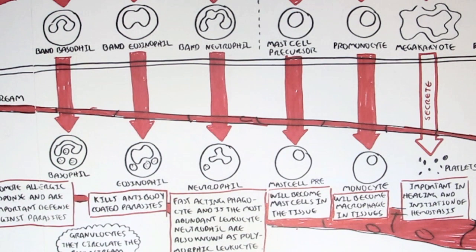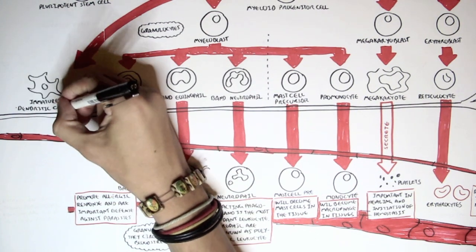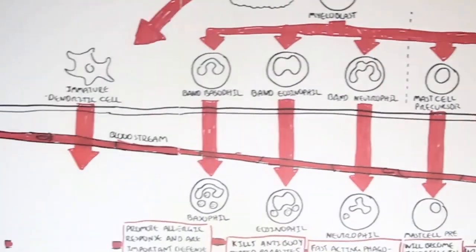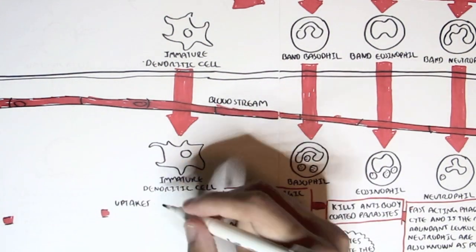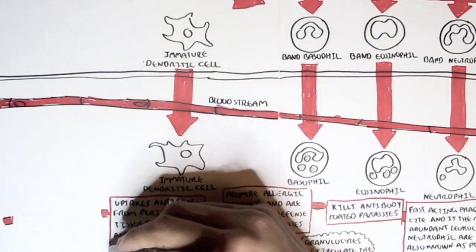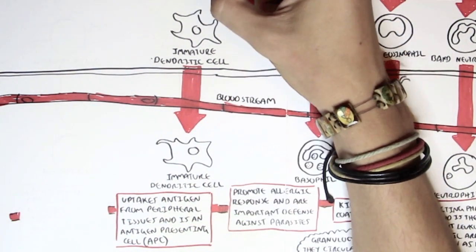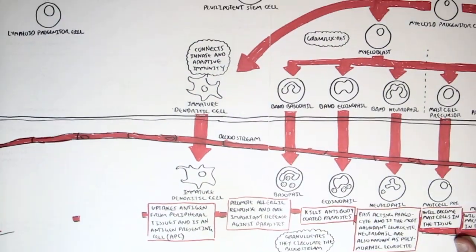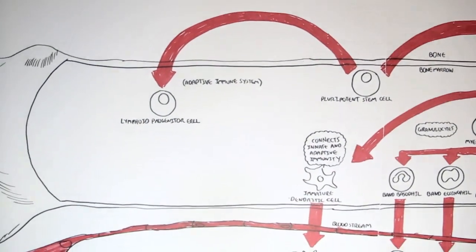The myeloid progenitor cell can also give rise to immature dendritic cells. Immature dendritic cells, once they leave the bone marrow, remain immature dendritic cells for a time. The dendritic cell's role is important because it is the connection between the innate and the adaptive immune system. Its role is to enter peripheral tissues, uptake antigens, and then present them as antigen-presenting cells to the adaptive immune cells. We'll learn about dendritic cells a lot more later on.